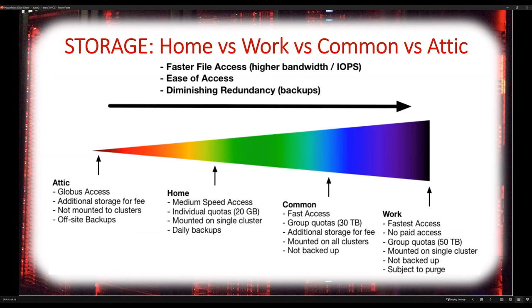On the far left is Attic, our nearline archival service. The only way to access it is through SFTP transfer using something like WinSCP, Cyberduck, or Globus. It's not directly mounted on Crane or Swan to keep files extra safe, and there are copies in both Lincoln and Omaha. Next is Home — a 20 gigabyte allocation per user account, backed up daily, primarily used for important scripts, management, and self-installed software.